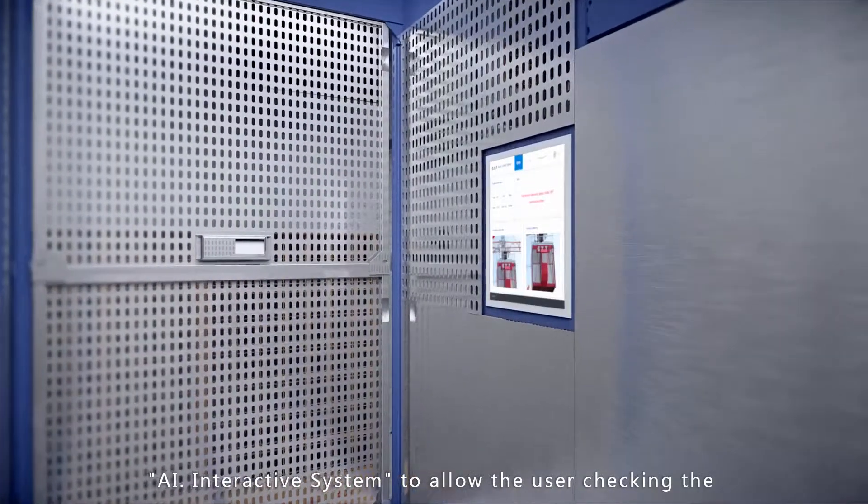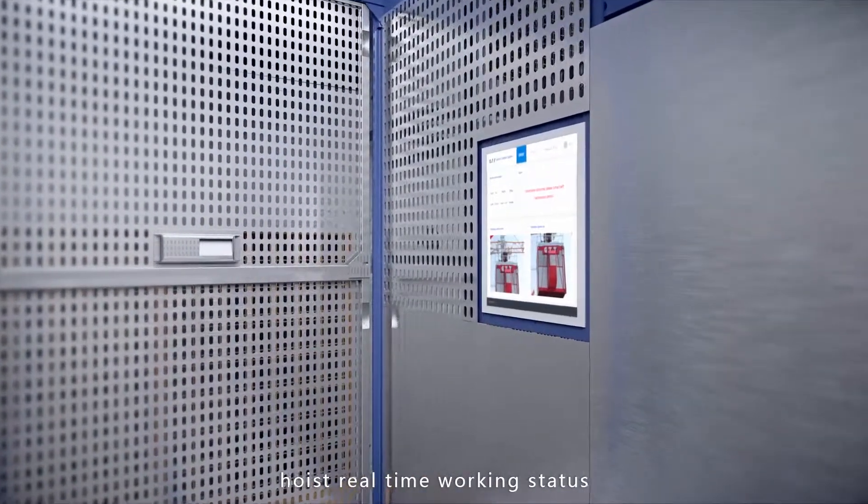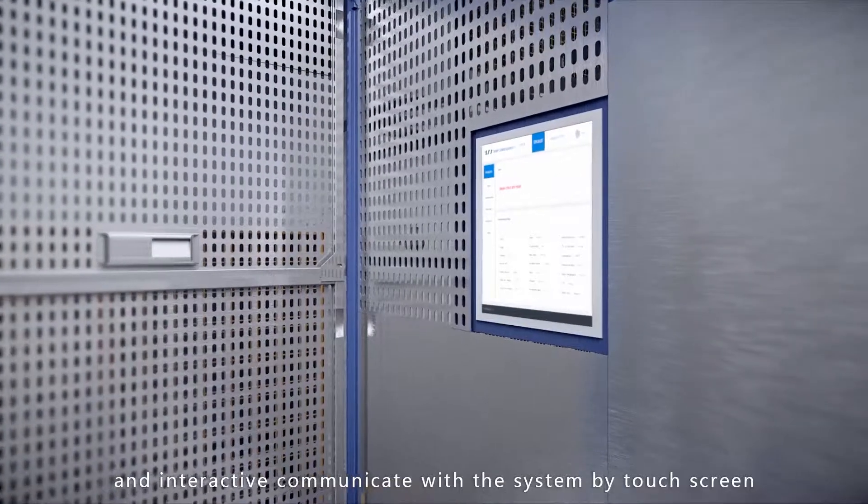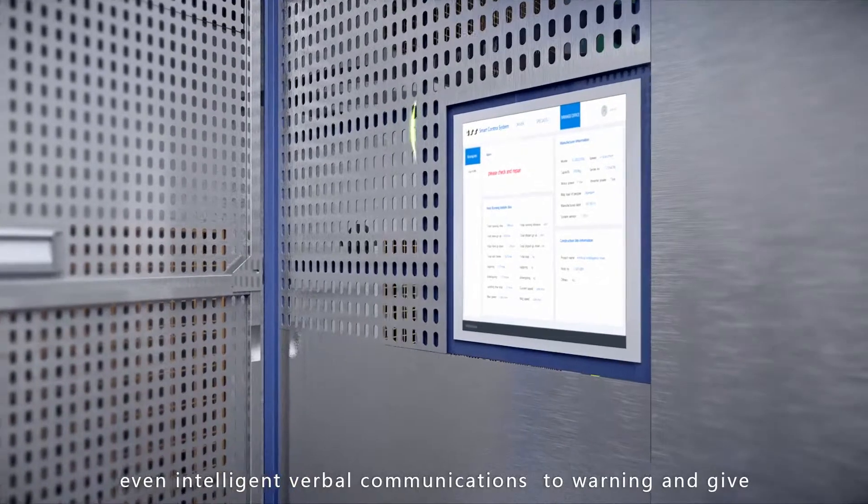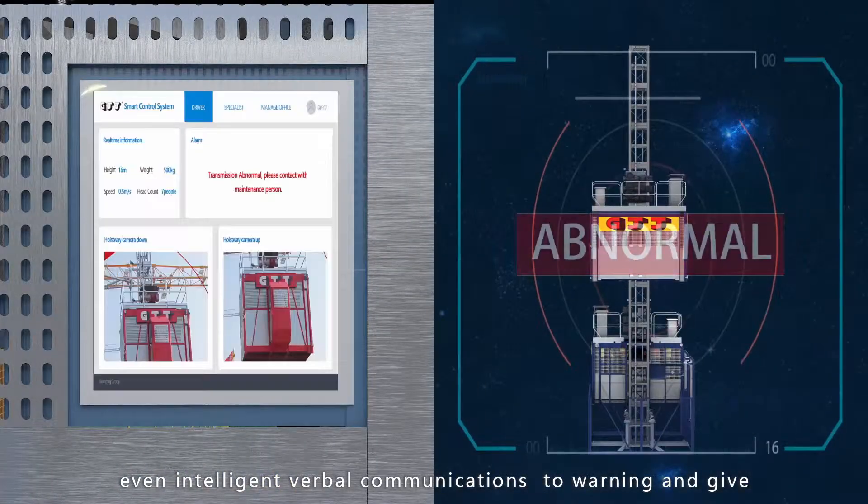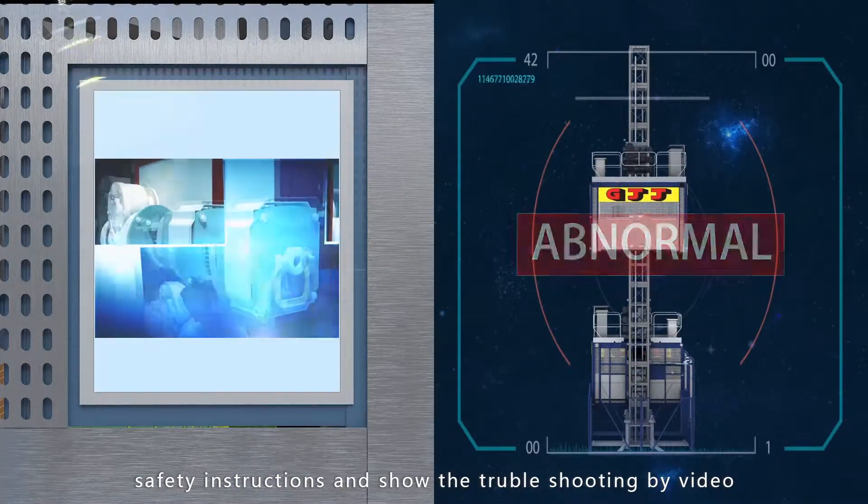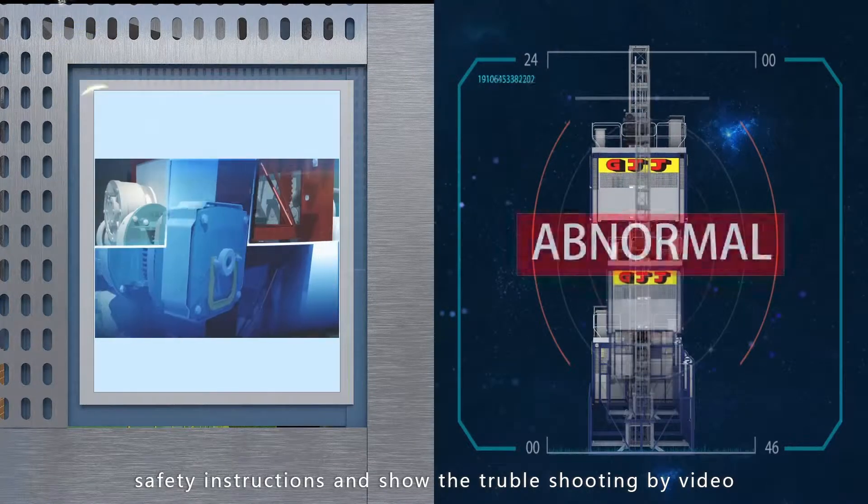AI interactive system to allow the user tracking hoist real-time working status and interactive communication with the system by touch screen, even intelligent robot communications, warning and give safety instructions, and shows the troubleshooting by video.